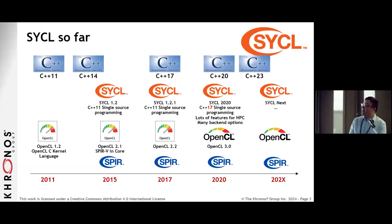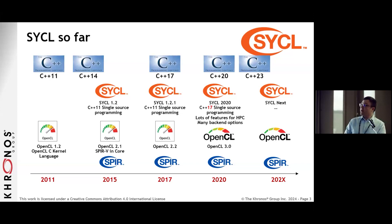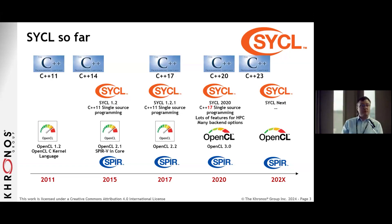SYCL has come a long way. You heard from Ken that SYCL originally grew out of OpenCL, started life as a subgroup before it was spun out as its own working group within Khronos. It was a way of exploring how we can do single-source programming for heterogeneous processors in modern C++ — starting with C++11 — where you can put all of your kernel code written in C++ alongside your host code, also written in C++, with all the benefits C++ provides around type safety.